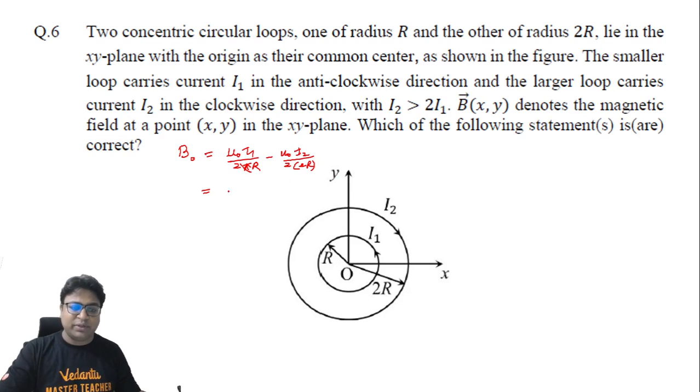Since I2 is more than 2 times I1, if I pull out mu naught by 2R as the common quantity, we get I1 minus I2 by 2. Since it is given that I2 is more than 2 times the value of I1, then we are going to get a negative number here.